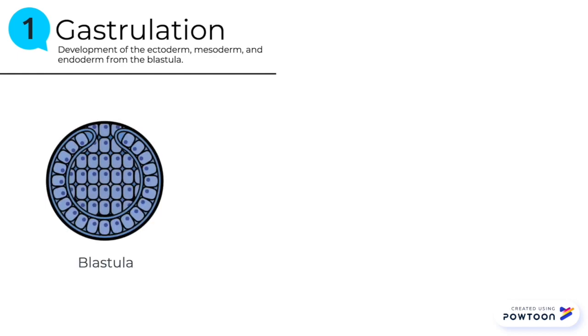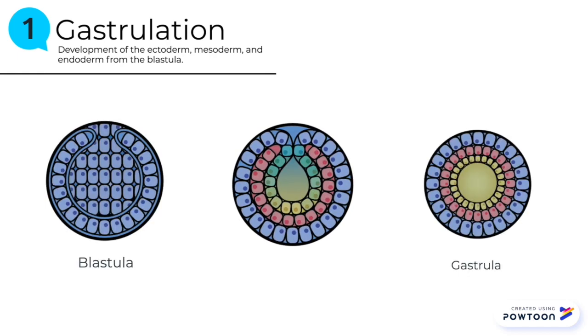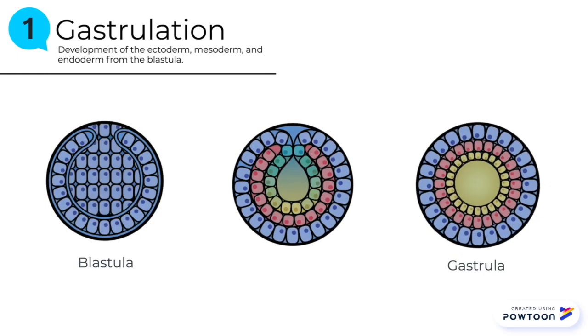The first step of this process is gastrulation. Gastrulation is the development of the ectoderm, mesoderm, and endoderm from the blastula. On the left, you see the blastula, and moving to the right, you see the development of the ectoderm in blue, the mesoderm in red, and the endoderm in yellow.